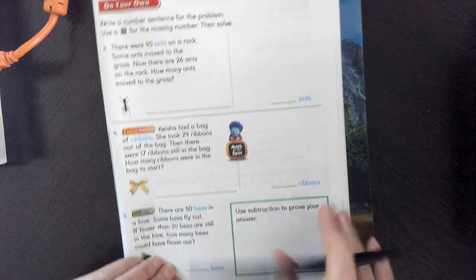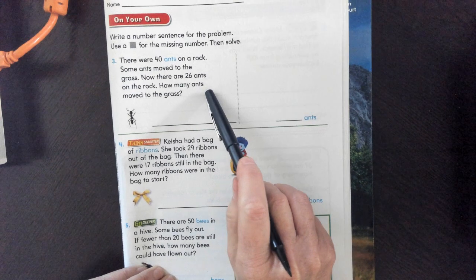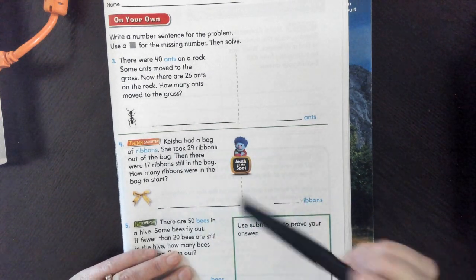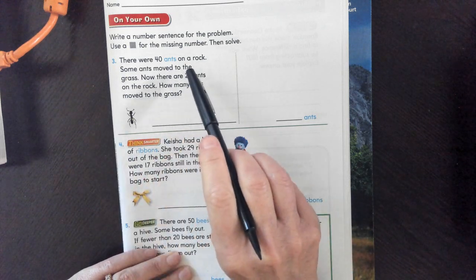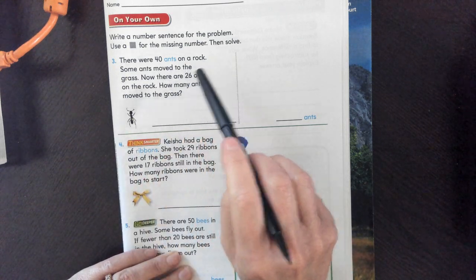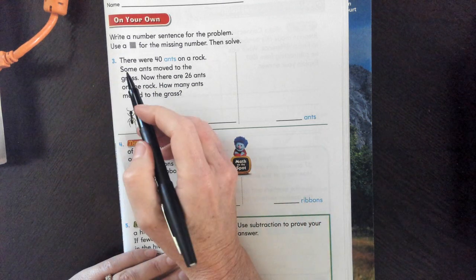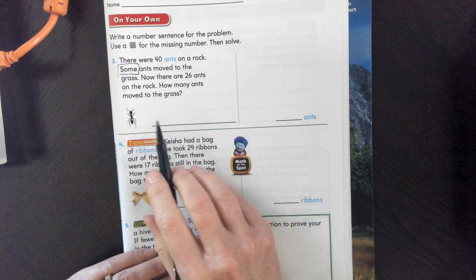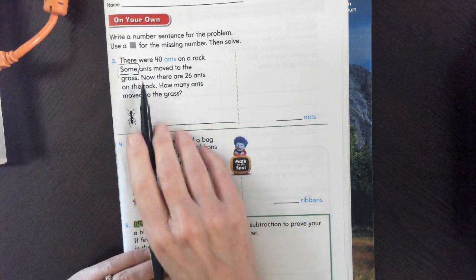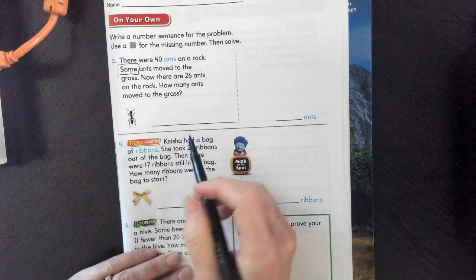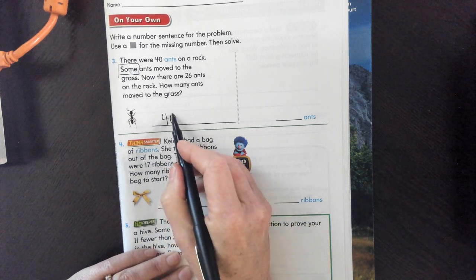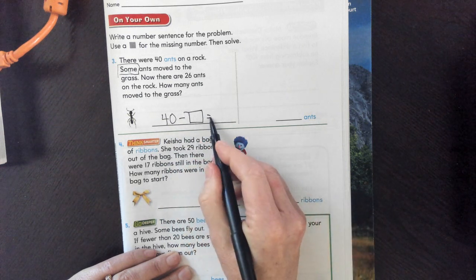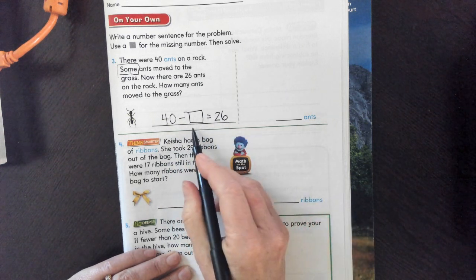So this time, try, that's a tricky one. Try number 3. Pause. Hopefully you did it. Let's see. There were 40 ants on a rock. Some ants moved to the grass. That's the part we don't know. Now there are 26 ants on the rock. So we want to know how many ants is that sum. How many moved to the grass. So we know there were 40 on a rock. Some of them moved on to the grass. And now there are 26 left. So we can solve for that box.